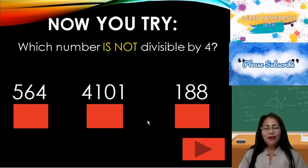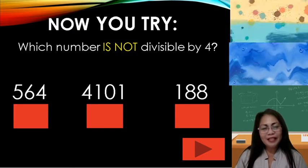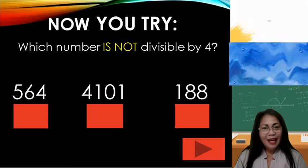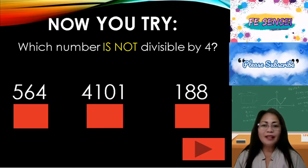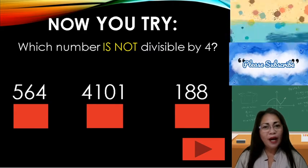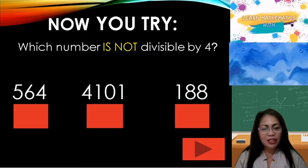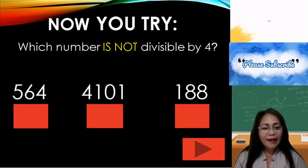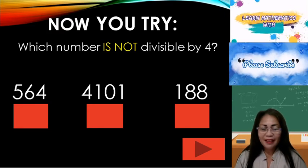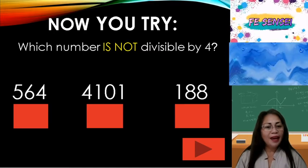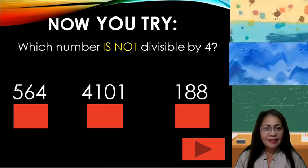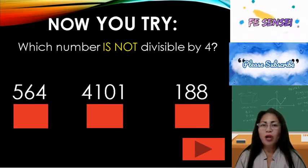Let's try. First number: 564 — the last two digits are 64. Is 64 divisible by 4? Another example: 4,101 — the last two digits are 01. Is 01 a multiple of 4 or divisible by 4? Last example: 188 — the last two digits are 88. Is 88 divisible by 4?